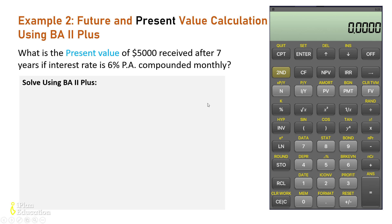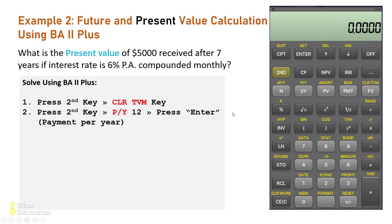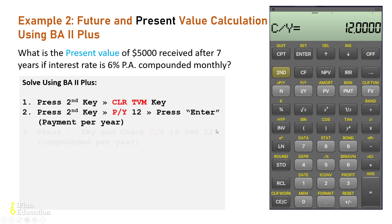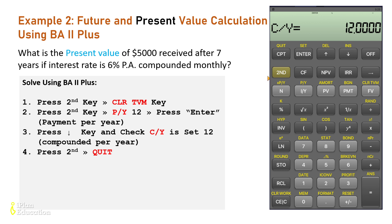Now press second key and then P/Y to enter the payments per year. This is very important — enter 12 for monthly, and you must press the Enter button to confirm. Check that C/Y is also 12. Then press the second key and quit to exit the P/Y setting.